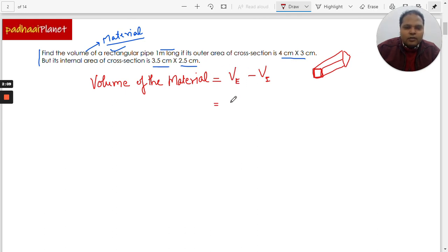What we can easily find out is the external volume is the length multiplied by the cross-section, which is 4 multiplied by 3, minus L multiplied by the internal cross-section, which is 3.5 multiplied by 2.5.